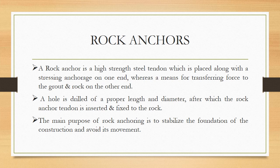What is the difference between ground anchors and rock anchors? Ground anchors are earth anchors provided in soil itself, whereas rock anchors are anchoring techniques provided for rocks. A rock anchor is a high strength steel tendon placed with a stressing anchor edge on one end and a means for transferring force to the ground on the other end. A hole is drilled in the rock with proper length and diameter, after which the rock anchor tendon is inserted and fixed to the rock. The main purpose is to stabilize the foundation and avoid its movement.